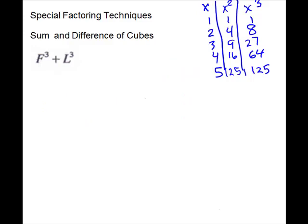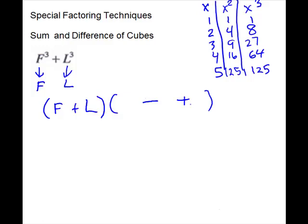Our next one: two terms, we have exponents of three, so we're going to try cubes. First cube root is just f, second cube root is just l. So we're going to use these pieces with the sign of the problem — that makes our first set of parentheses. Second set of parentheses will be a trinomial. For your signs: the first sign will need to be the opposite of that — so if that one is plus, this one is minus. Last one is always plus. Now you're going to go back to your roots: the first one times itself — first one squared. The first one times the second one. And the last one times itself — last one squared.